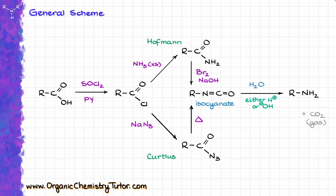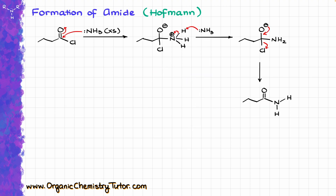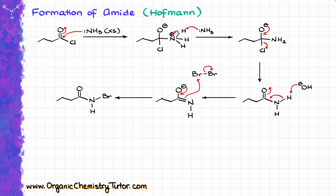Going back to the general scheme: after we form the amide in the Hofmann pathway, we do a reaction with Br2 in the presence of sodium hydroxide. Hydroxide comes in and deprotonates our amide, giving the following intermediate. This proton transfer is fairly easy because amides have a pKa of roughly 15, so we expect a reasonable equilibrium constant for this step. Once we have this negatively charged species — a good nucleophile — it reacts with the electrophilic bromine present in the system, giving us the N-bromo halide.